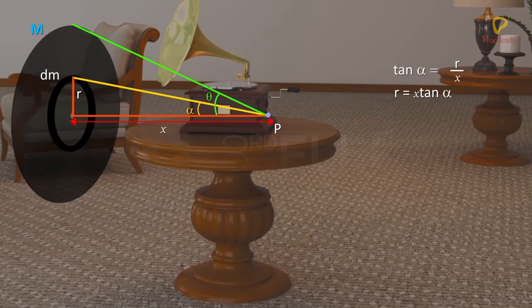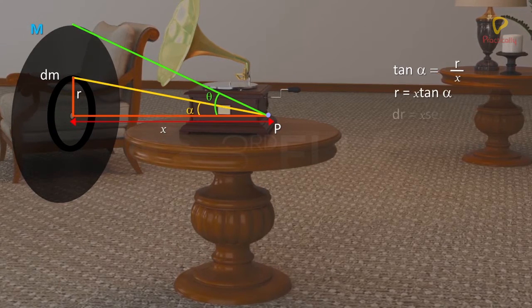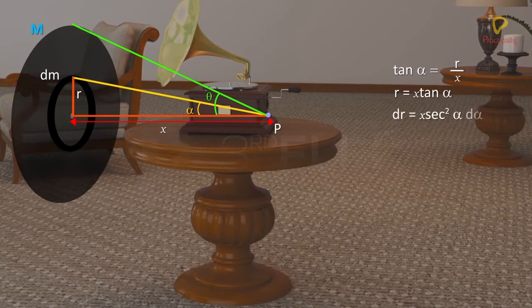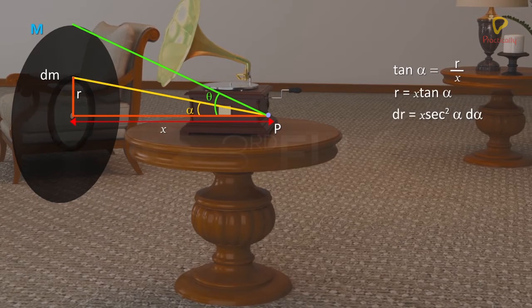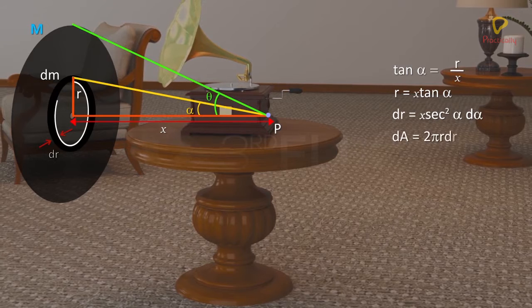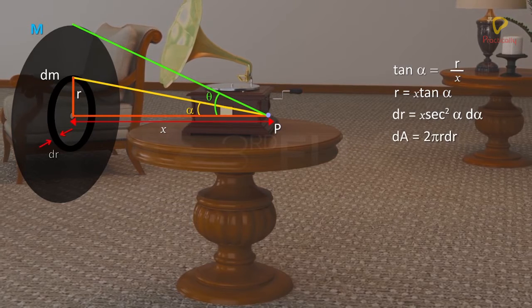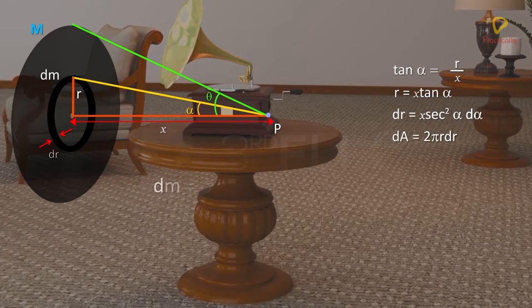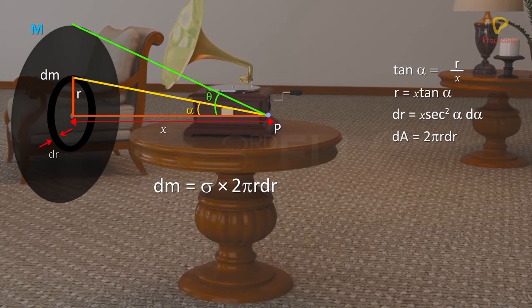On differentiating the equation, we get dr equals X sec squared alpha d alpha. Area of the ring element is the product of its circumference and width. As the disc is uniform, mass of the ring element is sigma times the area of the ring element.